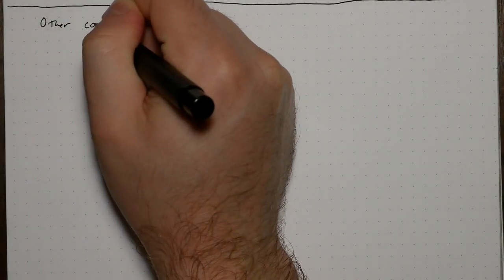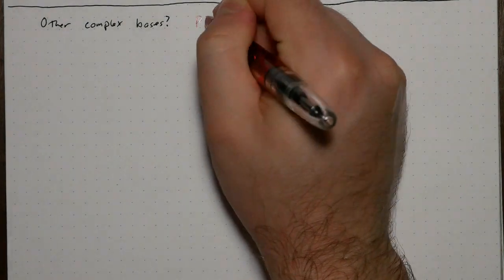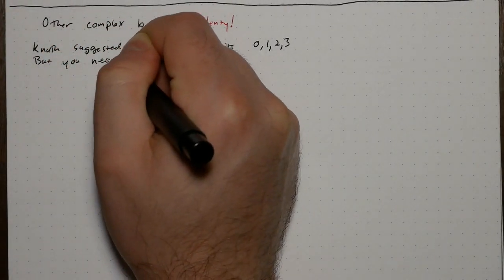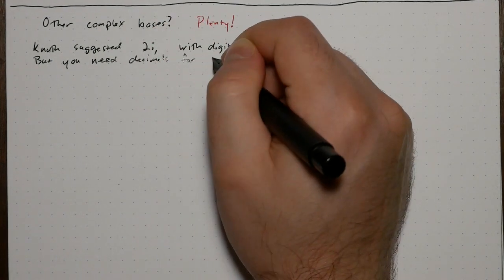What about other complex bases? Well, there's plenty. Knuth suggested base 2i, but that needs a decimal place for complex integers with an odd imaginary part. Also, you don't get a nice fractal.